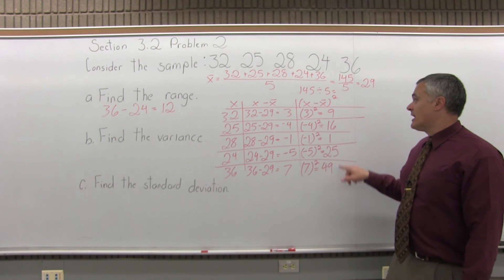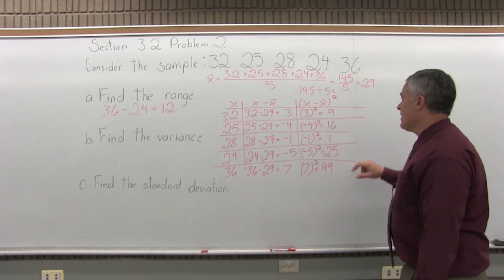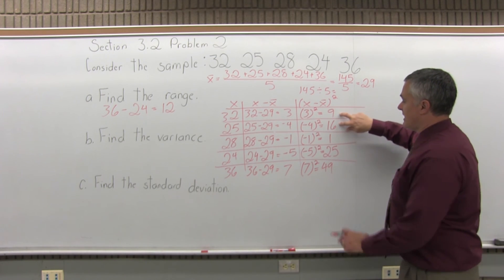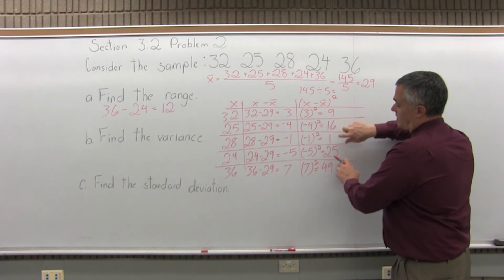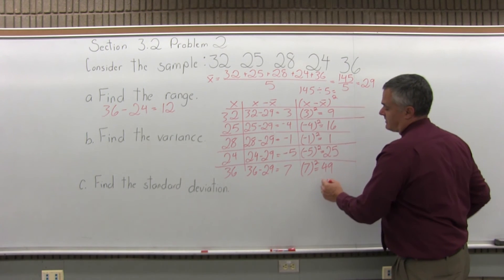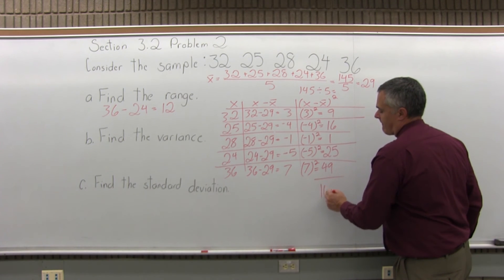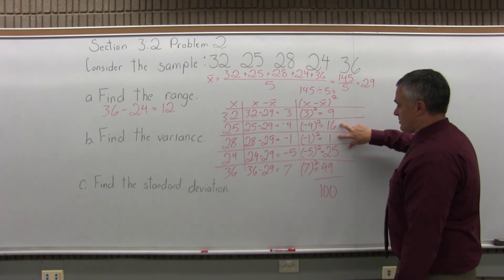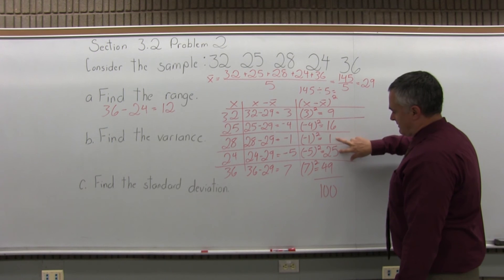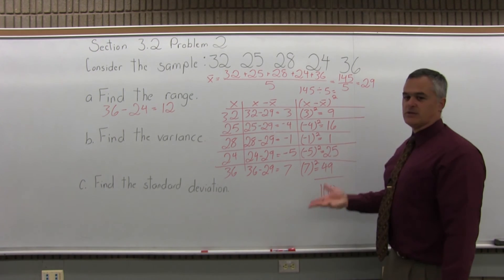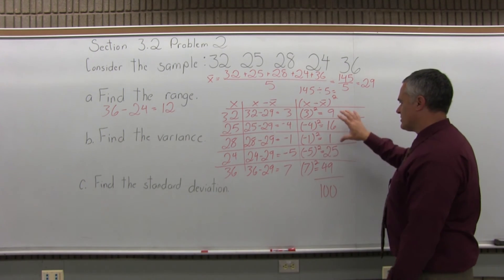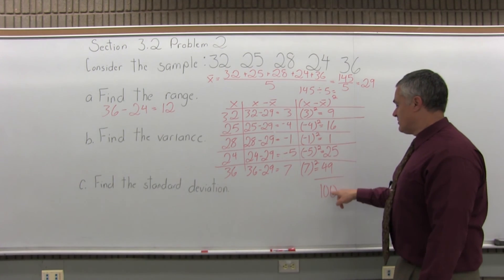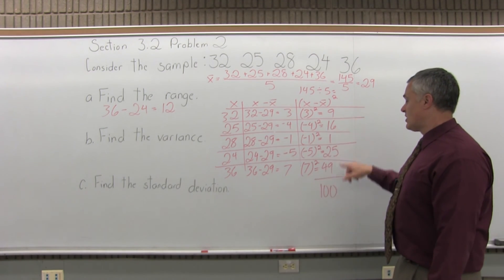Step 3, get a total of the last column. So, 9 plus 16 is 25. And I can add 25 and 25 is 50. 1 and 49 is another 50. 50 and 50, 100. Or, you can do 9 and 16 is 25. Plus 1 is 26. Plus 25 is 51. Plus 49 is 100. You could add going straight down, but I saw that I could group it in a certain way to make it easier. So, the result of step 3, total of the last column is 100.